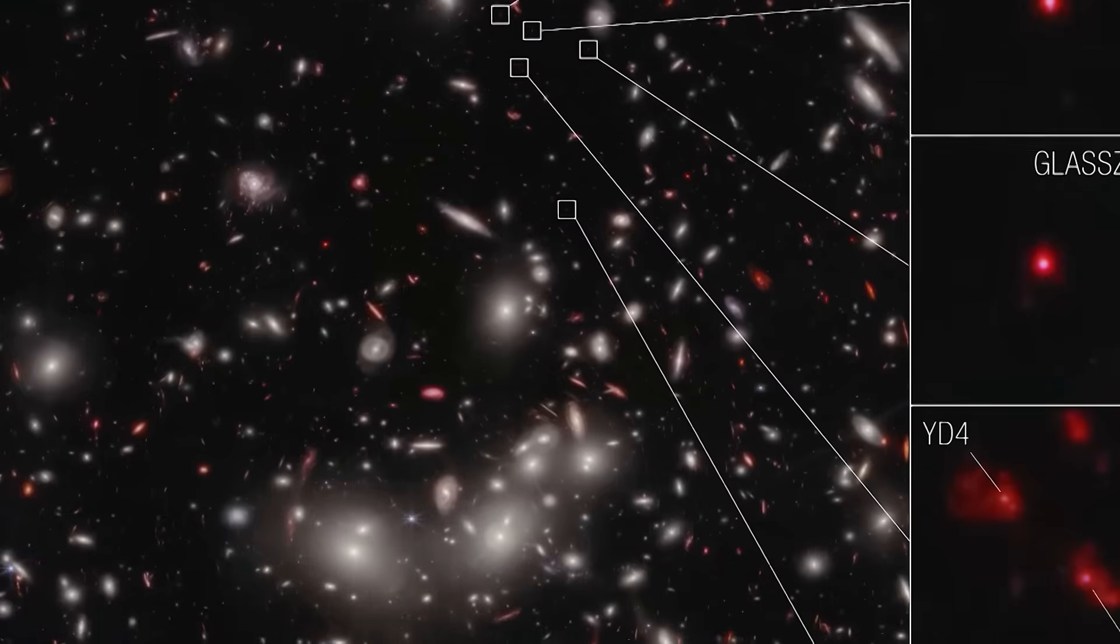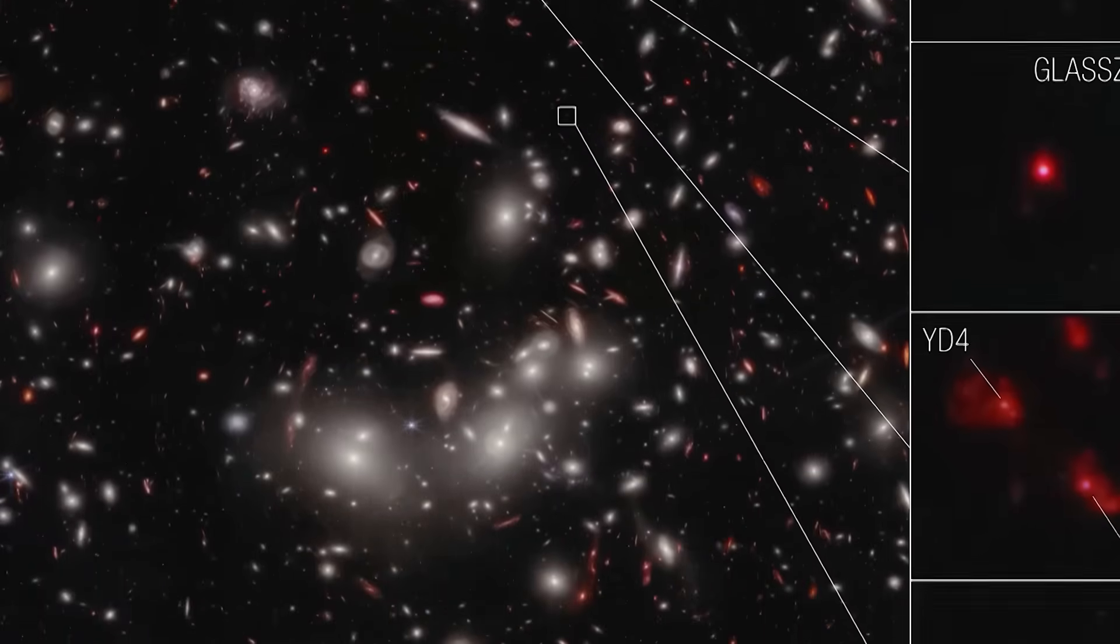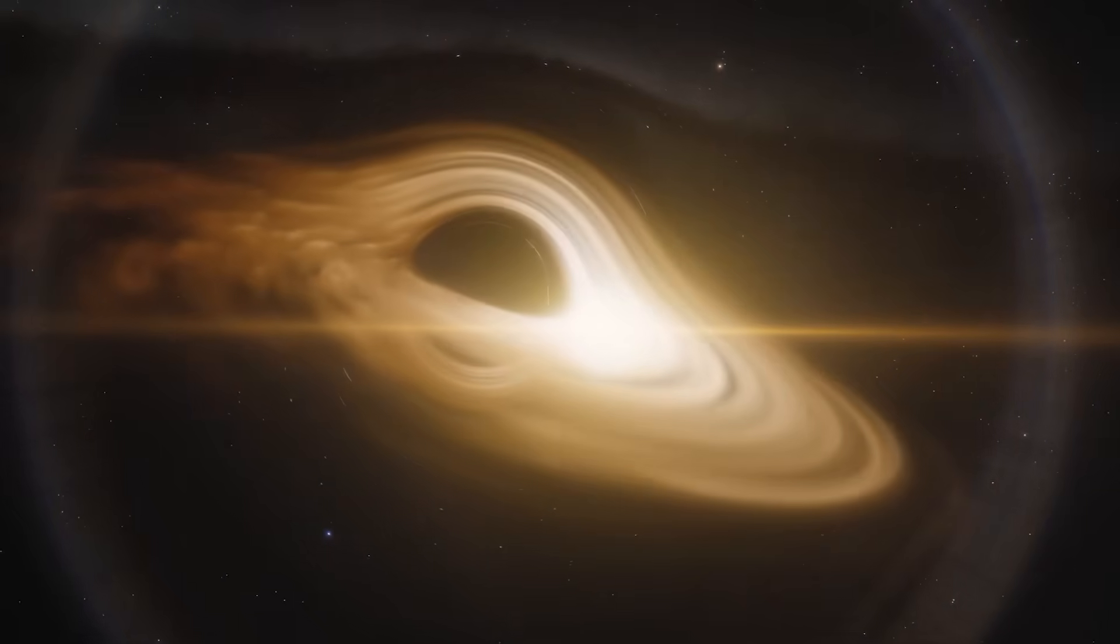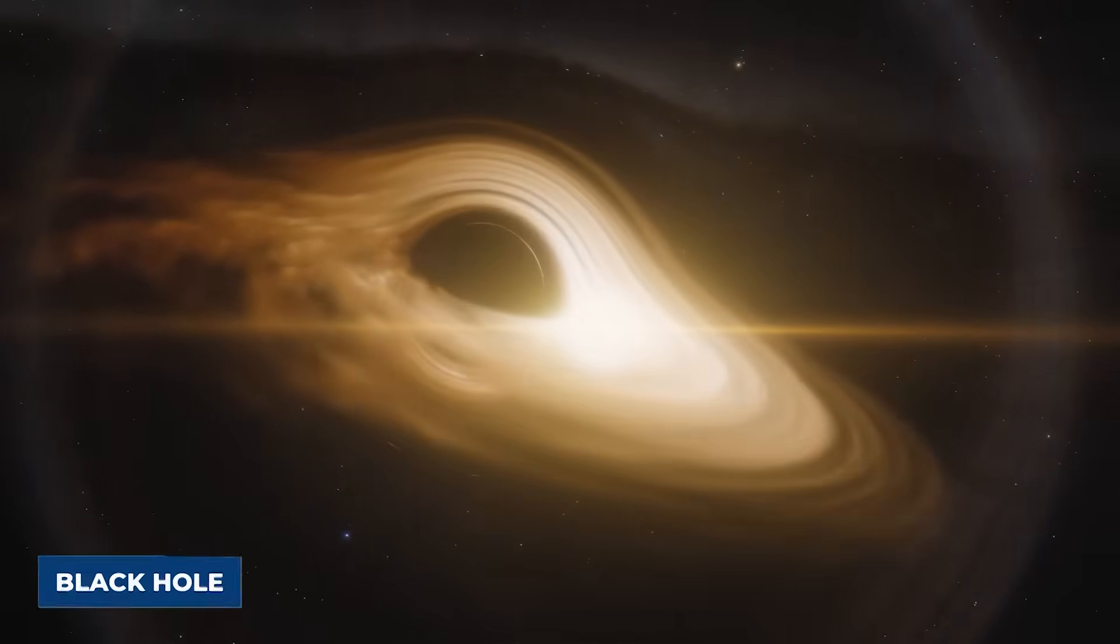This was no feeble collection of protostars. It was a well-formed cosmic titan with massive spirals, structured arms, and clear evidence of supermassive black hole activity at its core.